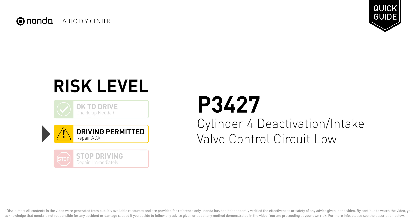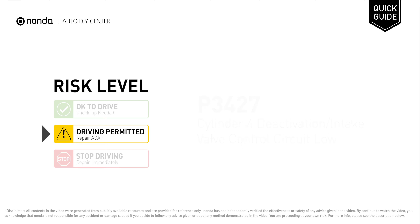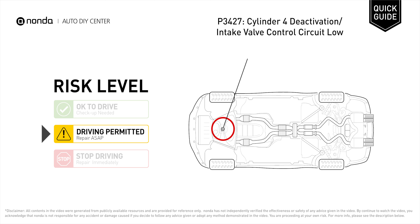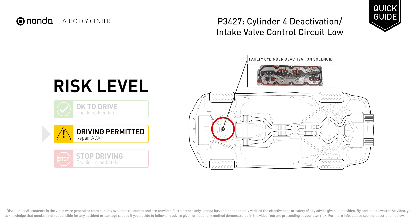P3427 is a diagnostic trouble code for Cylinder 4 Deactivation or Intake Valve Control Circuit Low. Under this circumstance, short distance driving is permitted, but your vehicle should be repaired ASAP. It indicates that the ECM has detected voltage or resistance inside the Cylinder 4 Deactivation or Intake Valve Control Circuit that is excessively low.